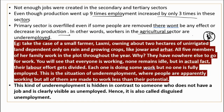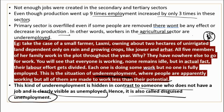If a land needs only five people to cultivate it but the family has ten members with no other job, all ten share the work — each person's capability is only partially utilized. This is called underemployment. Take the case of small farmer Lakshmi, owning two hectares of rain-dependent land with jowar and arhar crops. All five family members work throughout the year because they have nowhere else to go. Each one does some work but no one is fully employed — this is disguised unemployment.